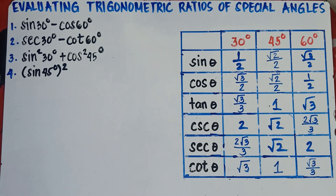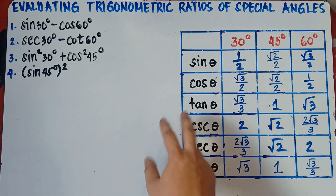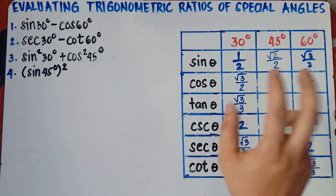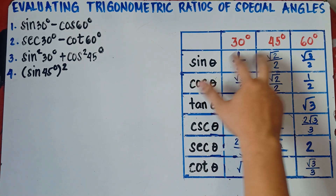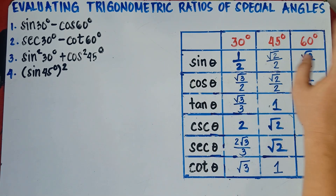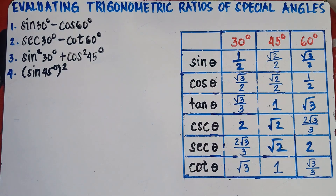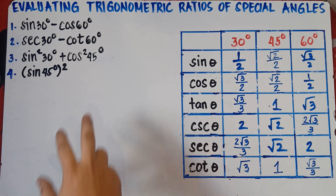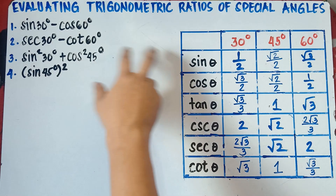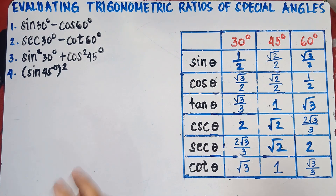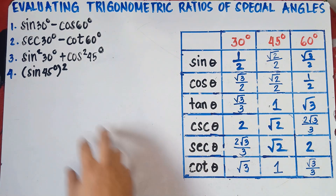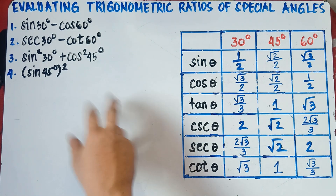This is already part 2 of our video class. In part 1, we actually solved for the values of sine, cosine, and so on with the given special angles 30 degrees, 45 degrees, and 60 degrees. Feel free to see that video class on how we derived these equivalents. This time, we'll be evaluating trigonometric ratios, and I will give you more examples.